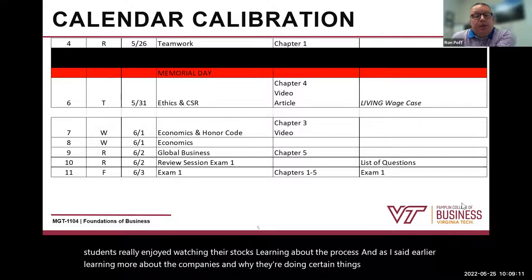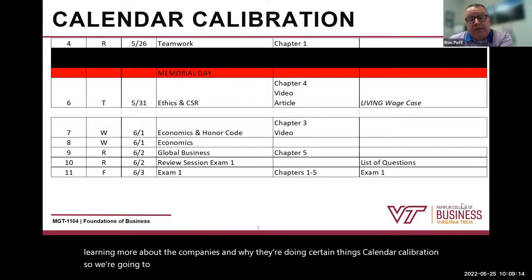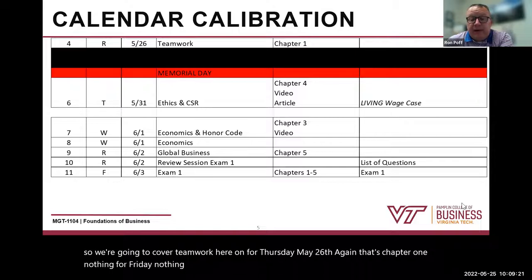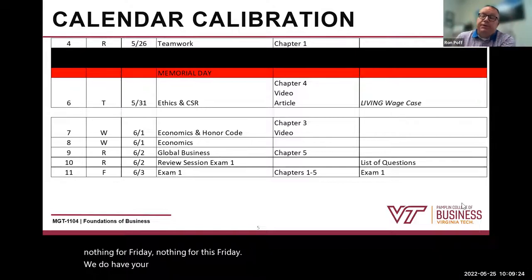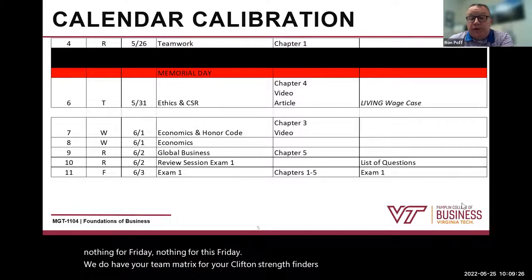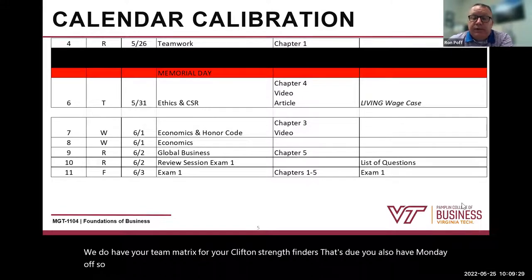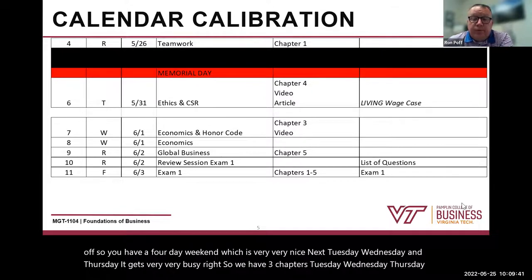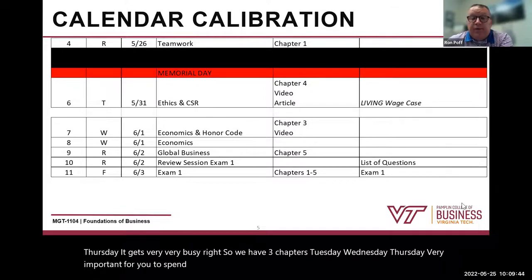Calendar calibration — we're going to cover teamwork here for Thursday, May 26th, which is Chapter 1. Nothing for this Friday; you do have your team matrix for your Clifton Strengths Finders that's due. You also have Monday off, so you have a four-day weekend, which is very nice. Next Tuesday, Wednesday, and Thursday it gets very, very busy — we have three chapters — so it's very important for you to spend time reading the chapters, watching the videos, and going through the information.